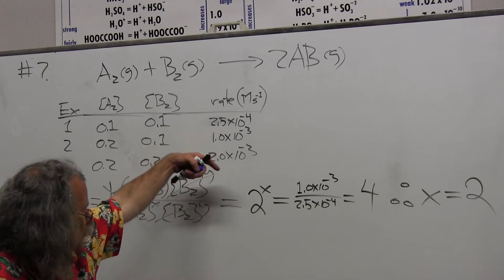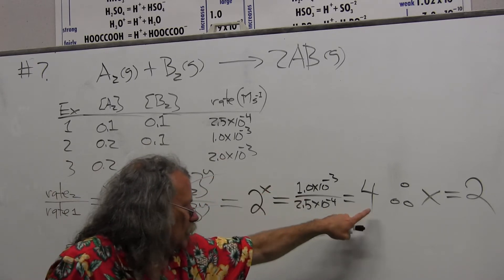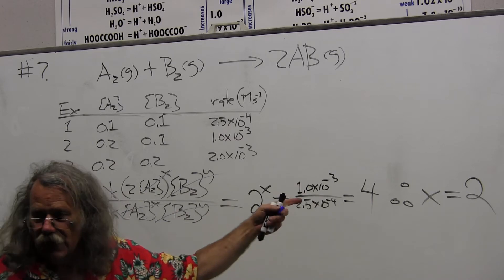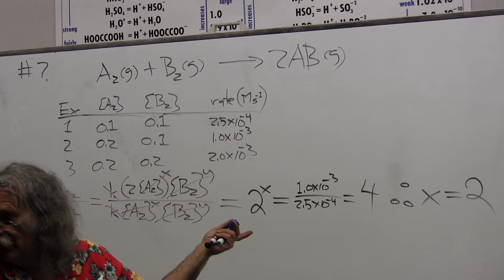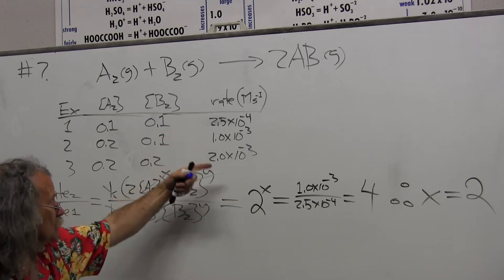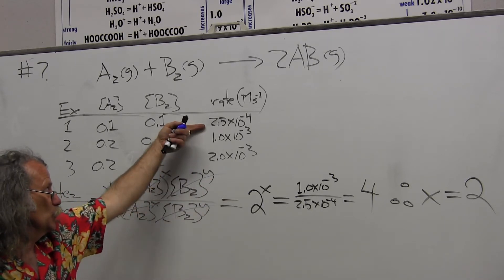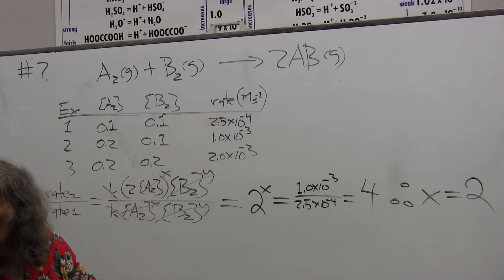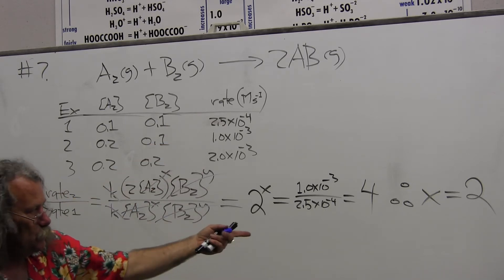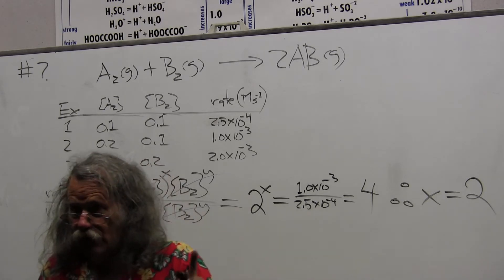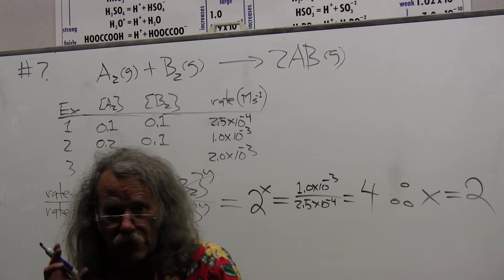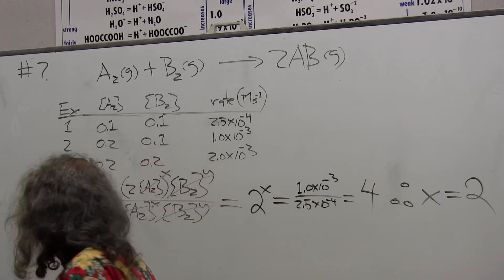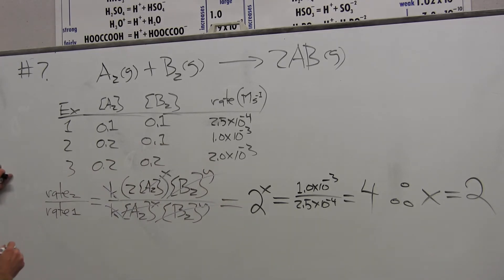Then I can take the two rates, I divide the two rates, and I'm equal to 4, which is basically what we did without even looking at any of this. When we looked at the rates, what's the relation between this and this? Well, this is 4 times that, and this one is 2 times that. So we already knew it was going to be second order, but now we can show that it is. We've proven that it's second order in A2, which is what I'm going to ask you to do on the test.